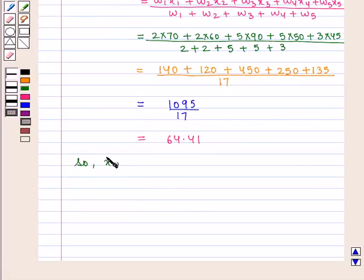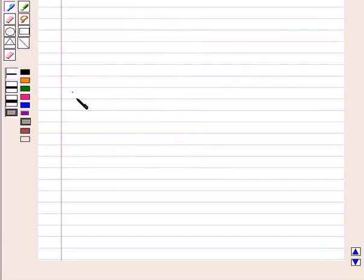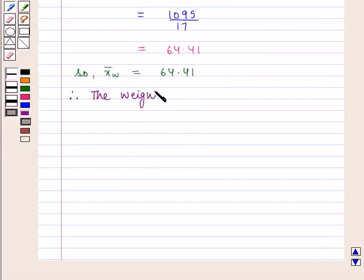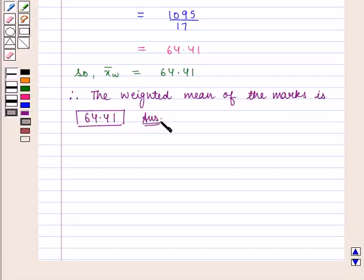So, x̄w is given by 64.41. Therefore, the weighted mean of the marks is given by 64.41 which is the required answer. This completes our session. Hope you enjoyed this session.